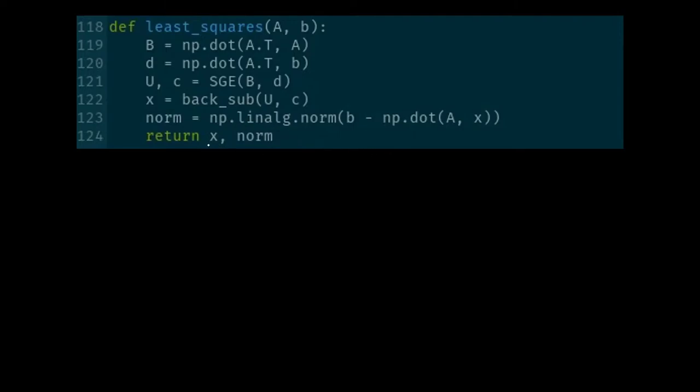Then we are returning our x-vector and the norm, since we need the norm so that we can understand just how good our least squares solution or x-vector approximation is.